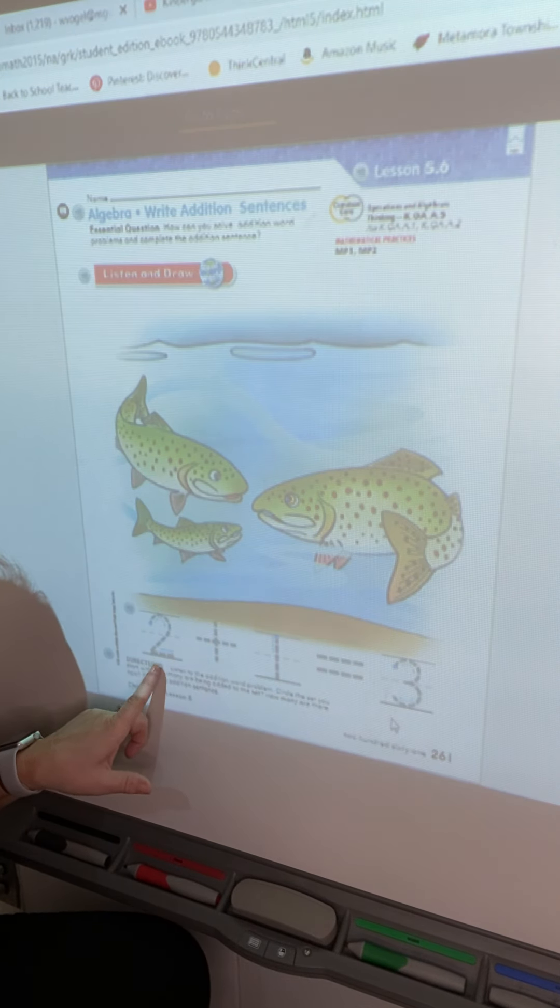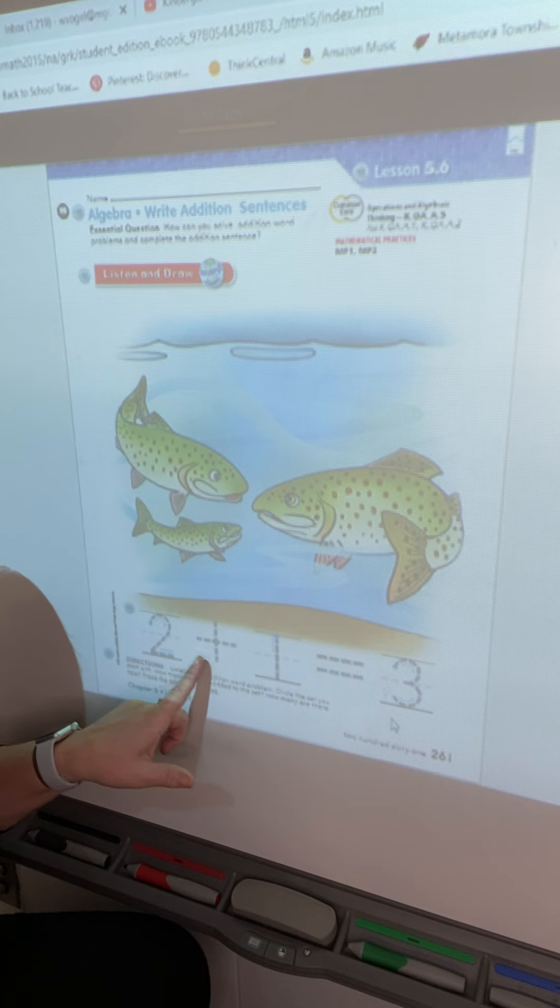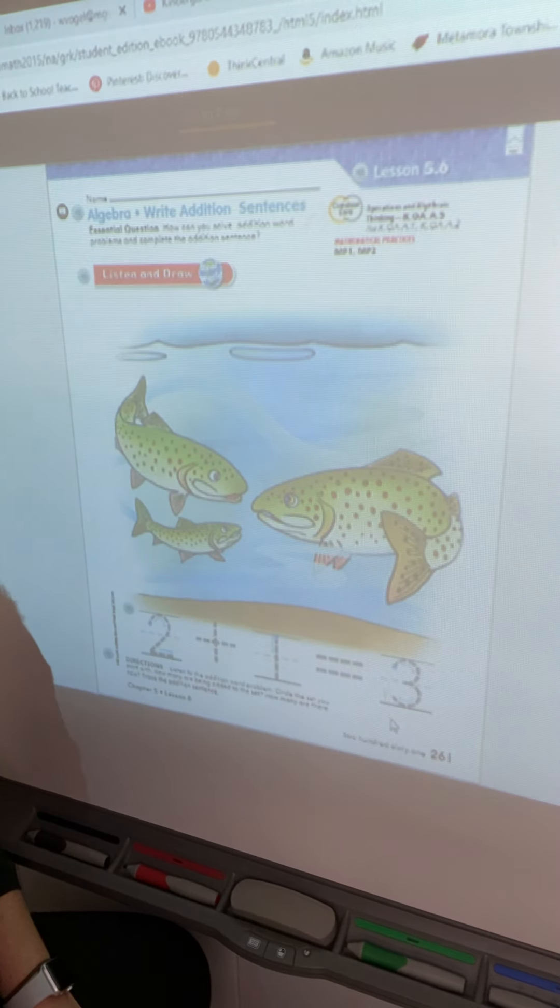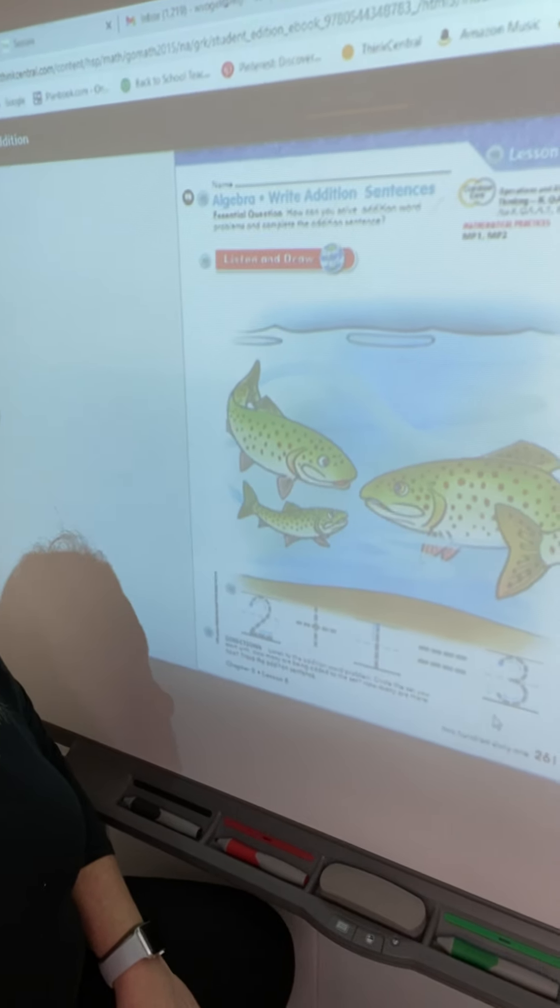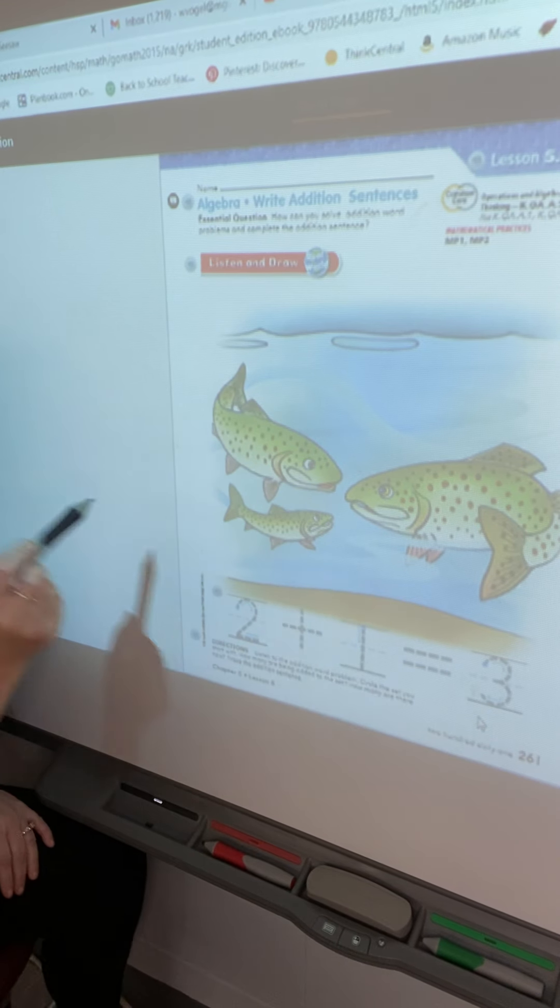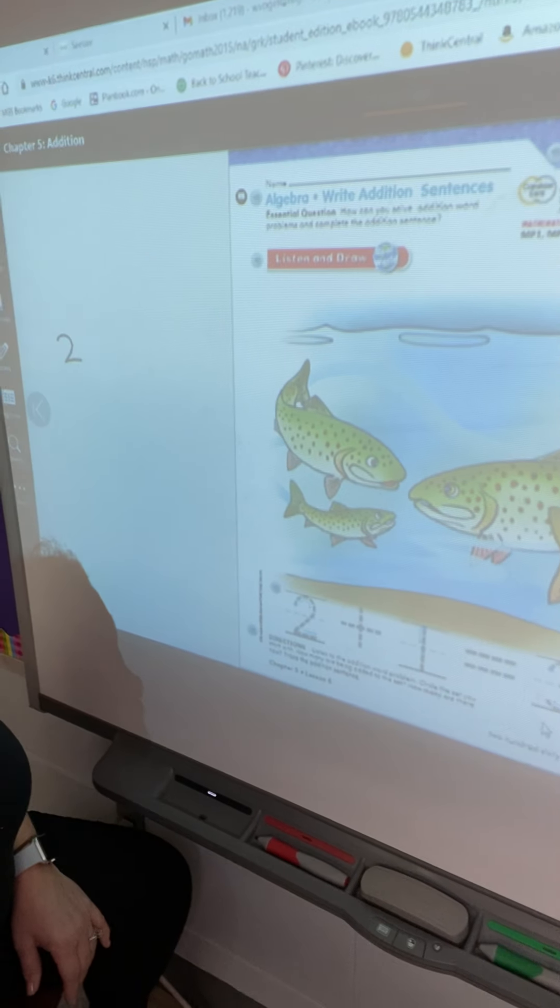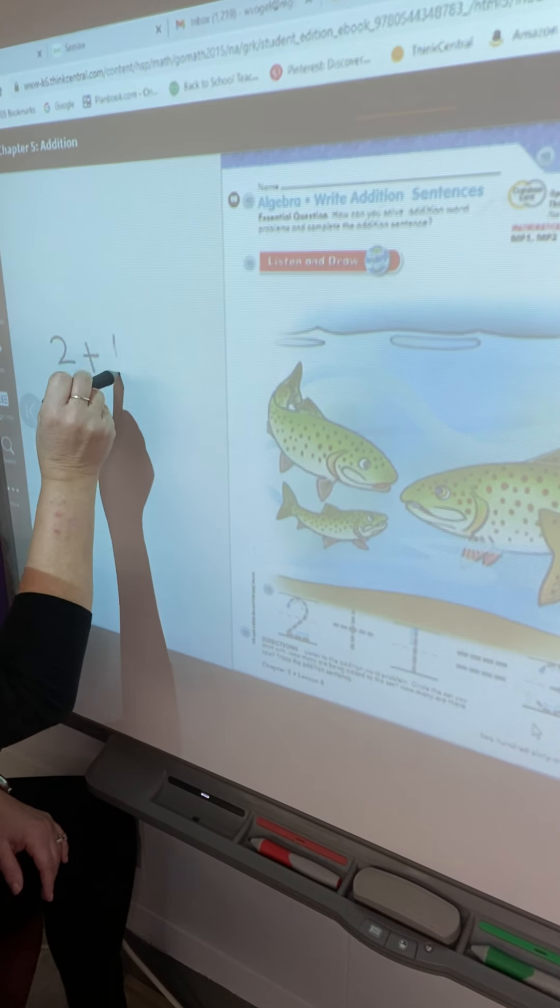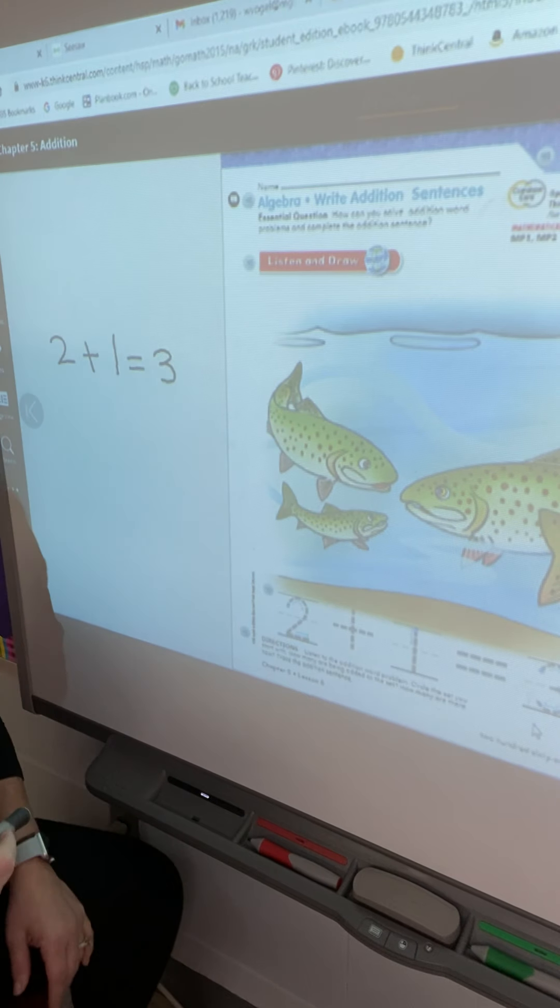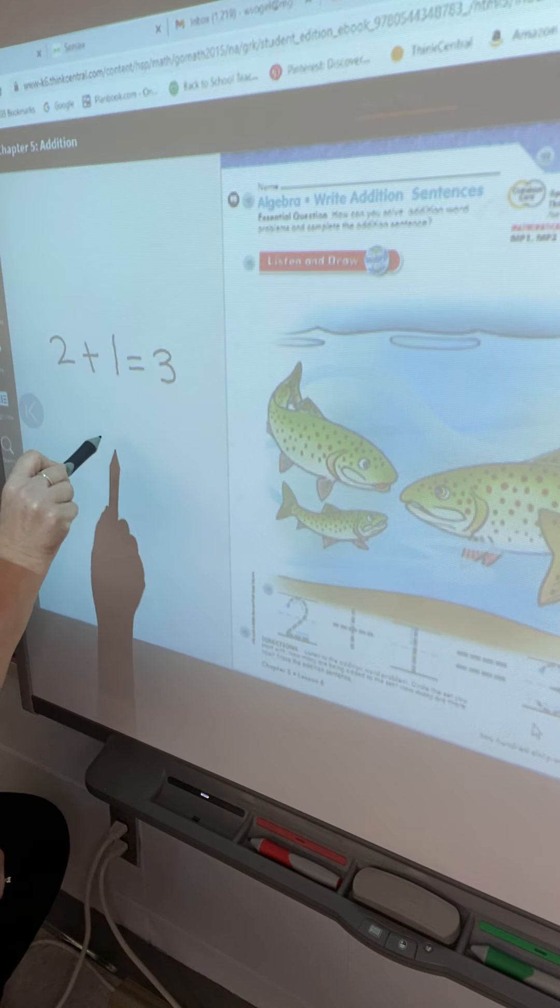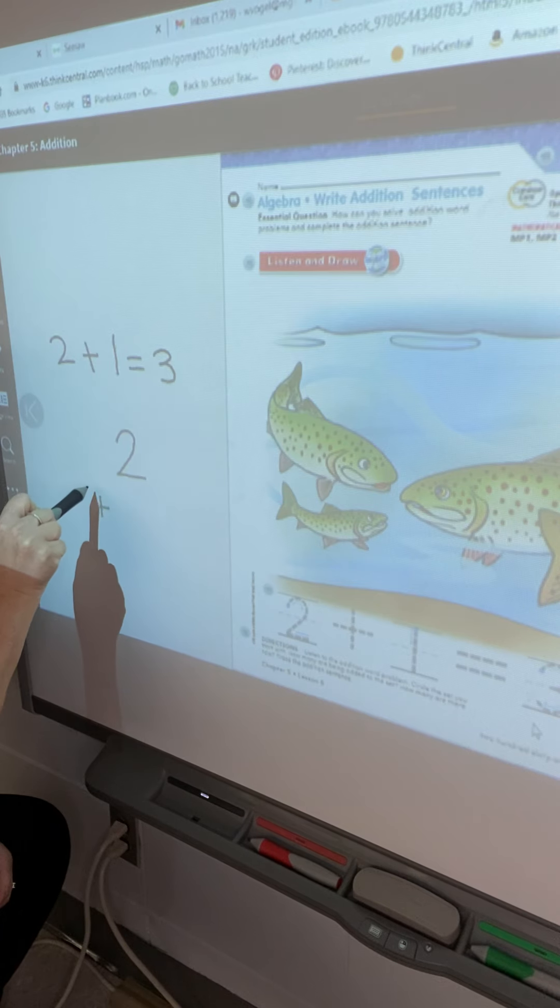As you can see, I spy some fishes. Do you? There are some fish that it looks like began in this location and there are two. So could you trace that two for me? And then there's that plus symbol again. Another fish swims up. So that would be one more fish. So if we started with two fish in the lake and we add one more fish, it would equal three. So we would read this sentence or this equation. Read it with me. Two plus one equals three.